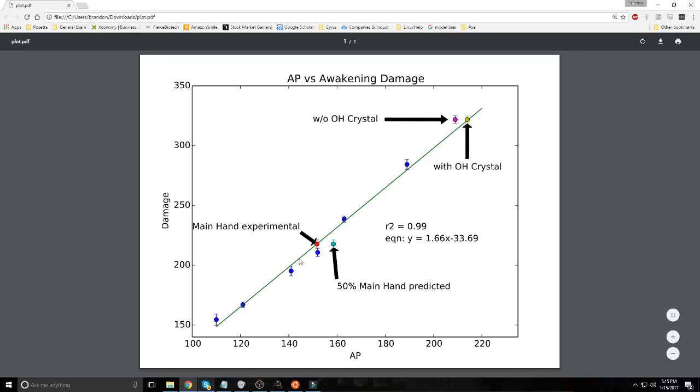What we can see looking at this graph right away if you look at the line here is that it has a very linear correlation. The R-squared value is 0.99.